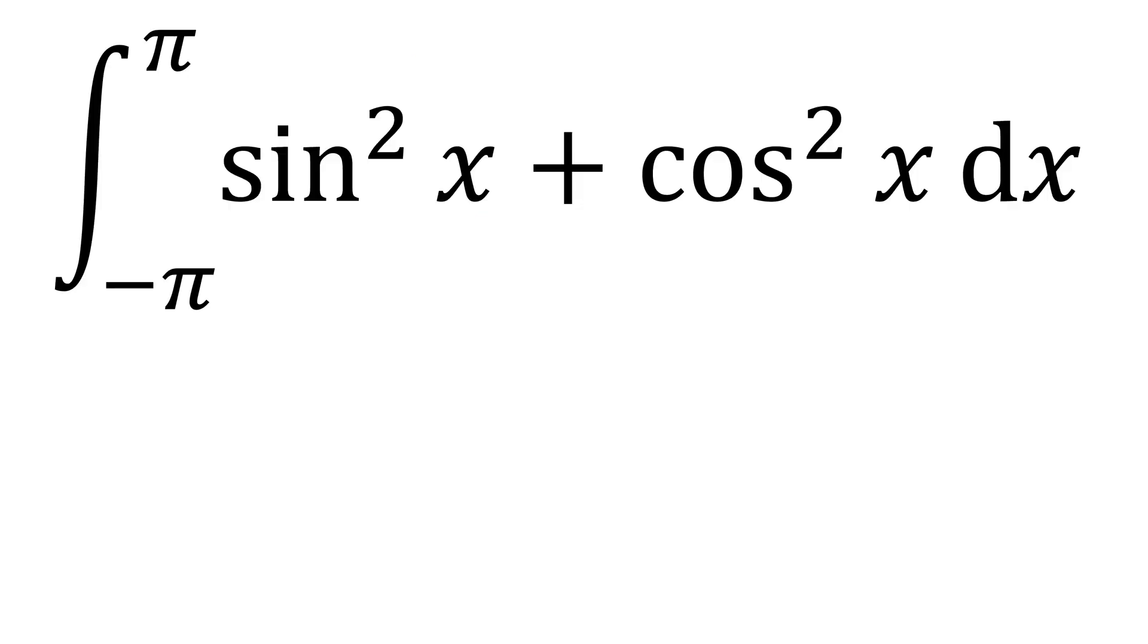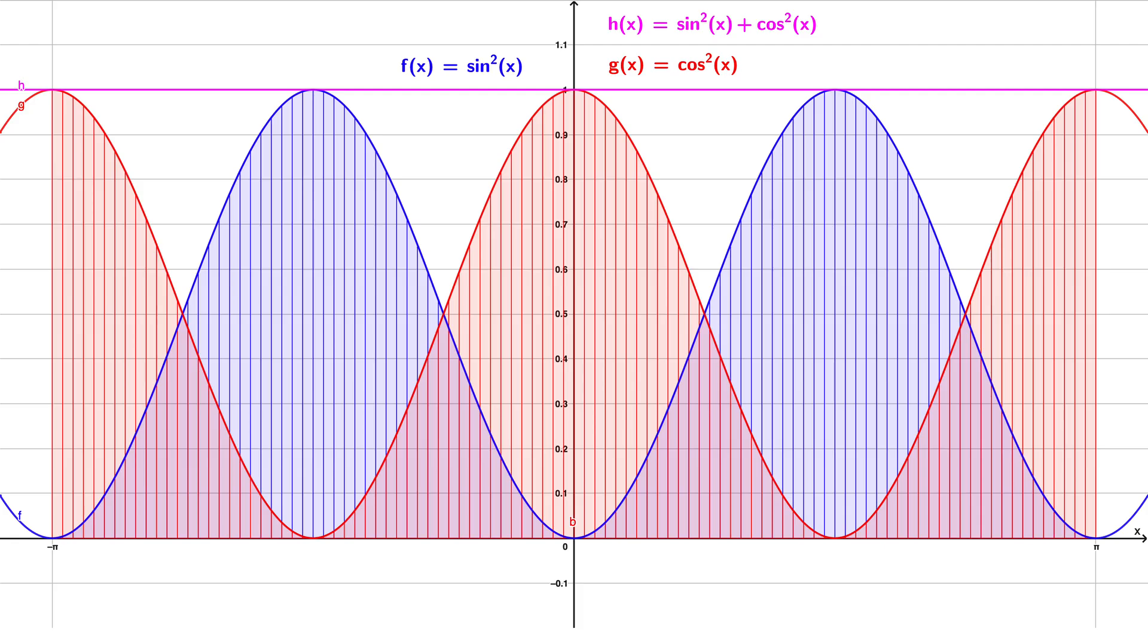Now, what we can do is to use sin square x plus cos square x as a whole for the integral, and later on, we can divide it into two since we need only the sin square x part. Using the trigonometric identity, sin square x plus cos square x becomes 1, as you can see in the magenta curve in this plot.